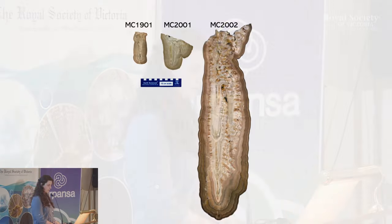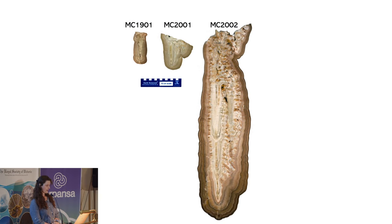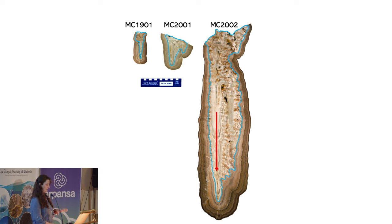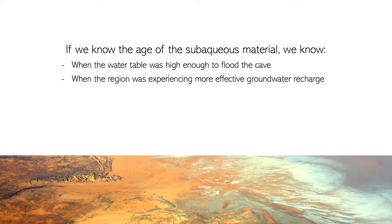These are the three speleothems we've worked on so far: MC-1901, MC-2001, and MC-2002. You can see highlighted in blue they all have that internal stalactite component with a downward direction of growth, and then the external subaqueously deposited material with a radial growth direction. If we know the age of this subaqueous material, we'll know when the water table was high enough to flood the cave and when the region was experiencing more groundwater recharge than it is today.